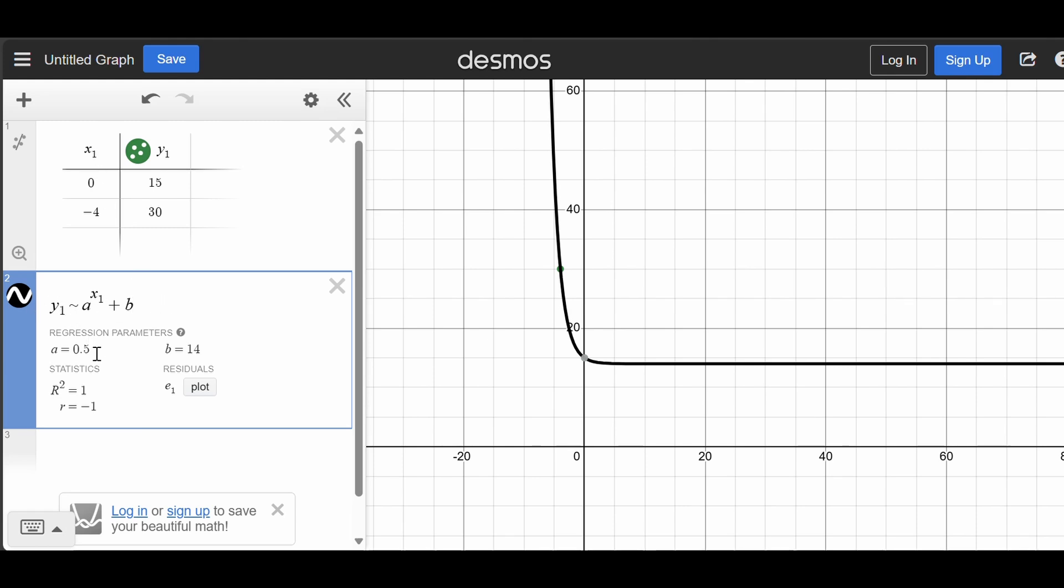And here you can see that they just gave me an a value and a b value, where it essentially graphed me this exponential function based on these points and based on this formula format.